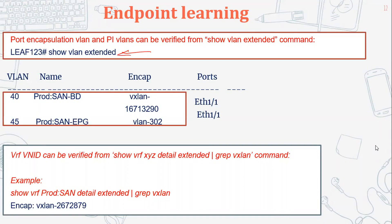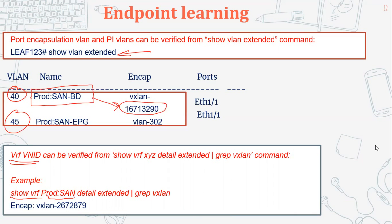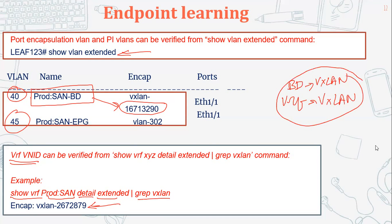With the command 'show vlan extended', you can see PI VLANs — for example PI VLANs 40 and 45. To verify the VRF VNI, run 'show vrf [vrf-name] detail extended | grep vxlan'. This shows the VRF VxLAN ID. As mentioned, whenever you create a BD or VRF, a VxLAN ID is automatically generated by the fabric and will be unique throughout your fabric.